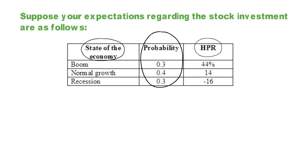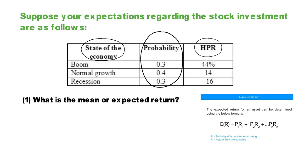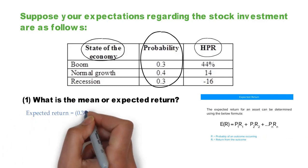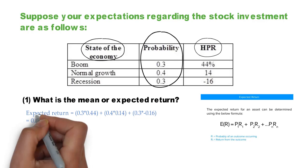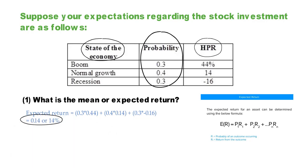In other words, you only know the likelihood of each event happening. Now, the first question: what is the mean or expected return? Using the following formula, the mean or expected return equals, you multiply each of these holding period return by their respective probability and add those up. You get 14%. So, if you invest in this stock, your expected return would be 14% regardless of the state of the economy.